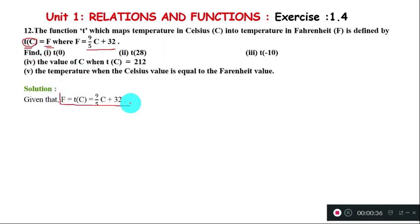Part (i): Find T(0). Applying the formula, T(0) = 9/5 times 0 plus 32. Since 9/5 times 0 equals 0, the answer is 0 plus 32 equals 32 degrees Fahrenheit.